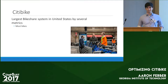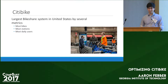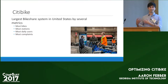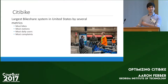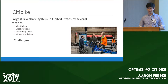Citibike is basically the largest bike share system in the United States by a lot of metrics. It has the most number of bikes, most number of stations, the most number of daily users, and also the most complaints as a result. So our goal is, in general, to try to minimize the number of unhappy customers. In order to do that, we have a bunch of optimization frameworks and machine learning frameworks to try to evaluate the number of unhappy customers.